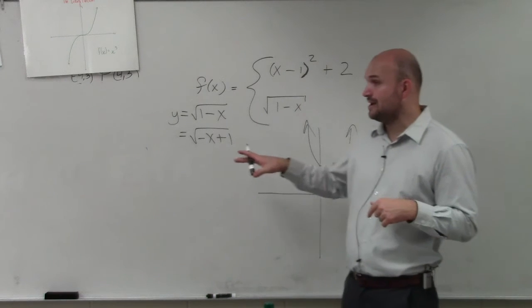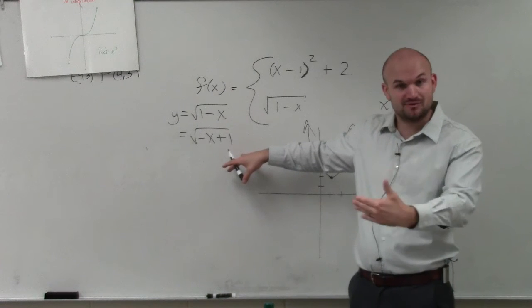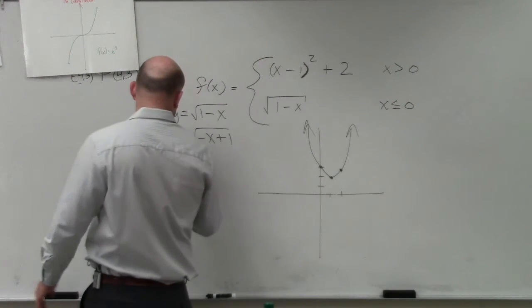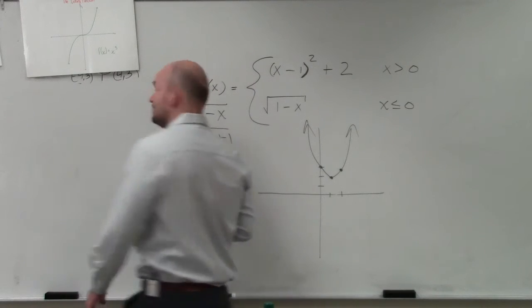And then realize, oh wait, I have an inside reflection and a shift. I've got to make sure I factor out that. So therefore, we rewrite this as negative x minus 1.